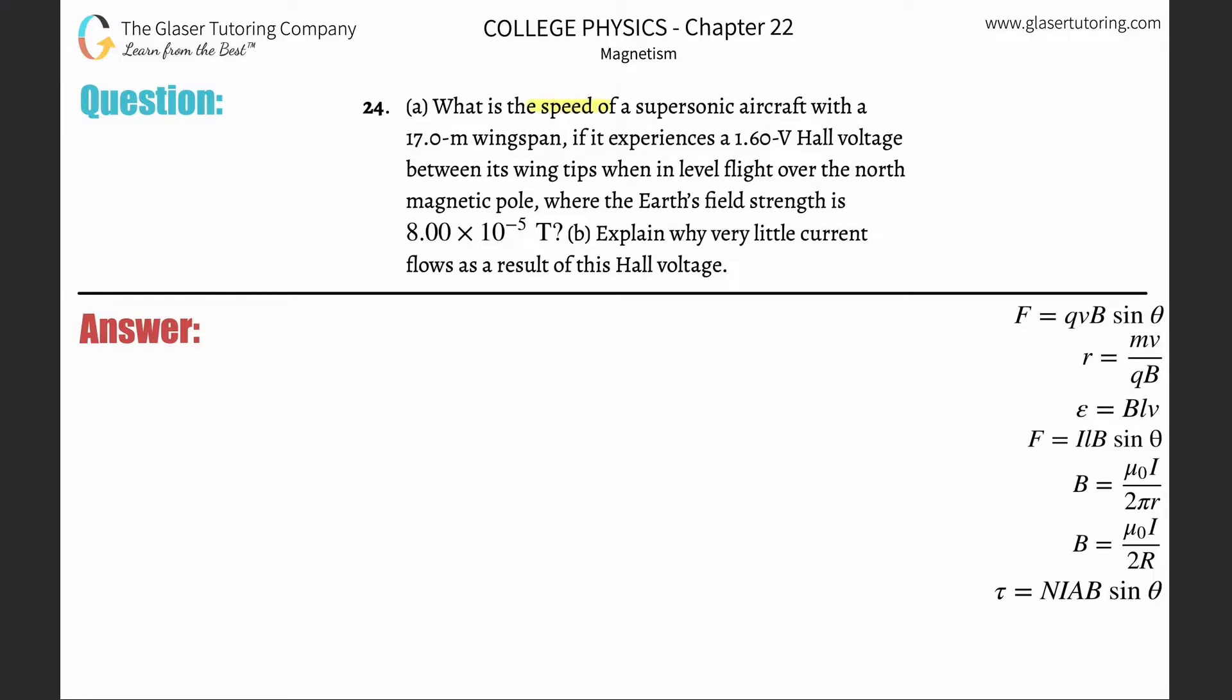Number 24, letter A: What is the speed of a supersonic aircraft with a 17-meter wingspan if it experiences 1.6 volts of Hall voltage between its wingtips when in level flight over the north magnetic pole, where the earth's magnetic field strength is 8 times 10 to the minus fifth tesla?